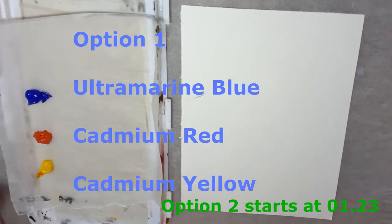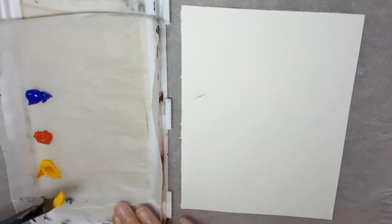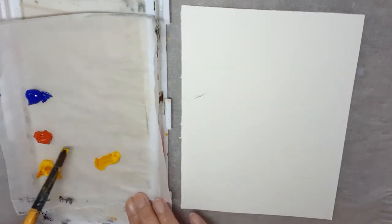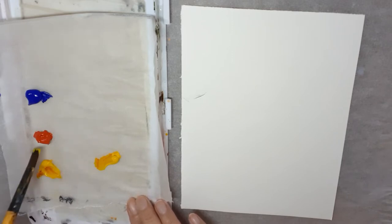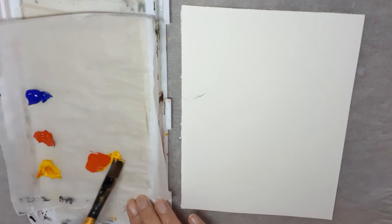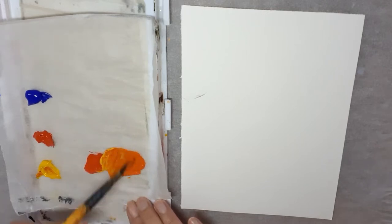To make terracotta you need cadmium yellow, cadmium red, and ultramarine blue. First make yourself an orange. Excuse the red contaminated, but it's the same red, so make yourself a nice orange.